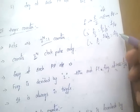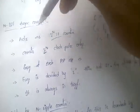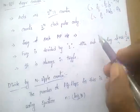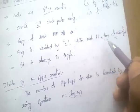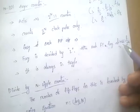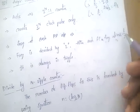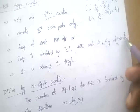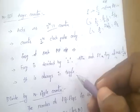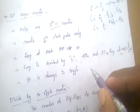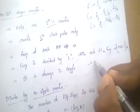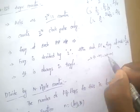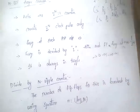The frequency at the MSB (most significant bit) equals f/2^n. The MSB flip-flop is always in toggle condition — toggle meaning it alternates: 0 to 1, 1 to 0, and so on. This is very important for PSU exams.